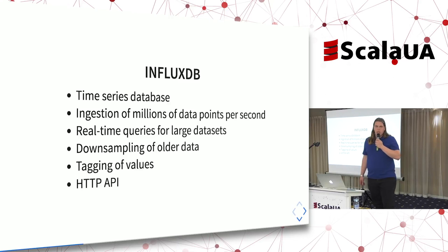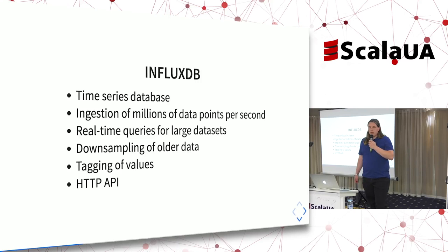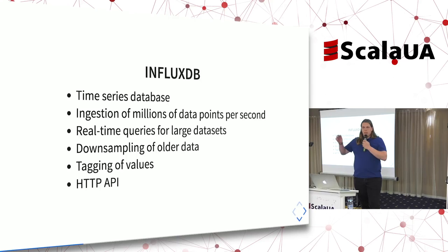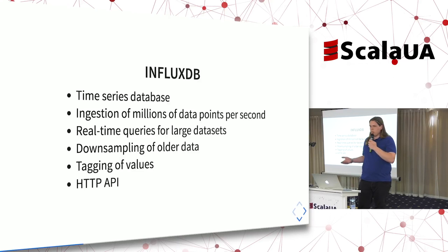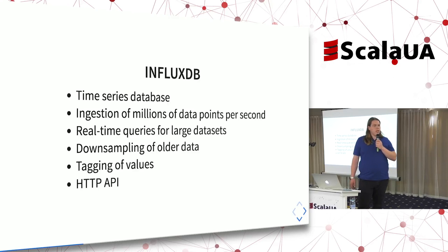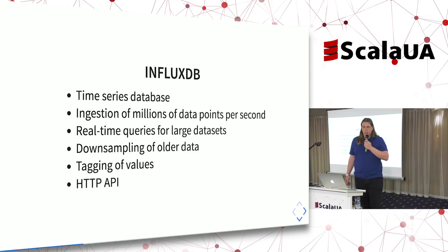Next up is InfluxDB. Instead of a traditional relational database like PostgreSQL or MySQL, I found InfluxDB — a time series database. Instead of a normal index, you have the timestamp as the index with values like humidity and temperature. You can also add tags to measurements, for example indicating which device, customer, room, or zone the data came from. That makes it really easy to query the data again. It supposedly allows for ingestion of millions of data points per second, making it really useful when you've got a lot of customers with smart thermostats or other devices generating data. It also allows for real-time querying of large data sets, indexed based on timestamp and tags.